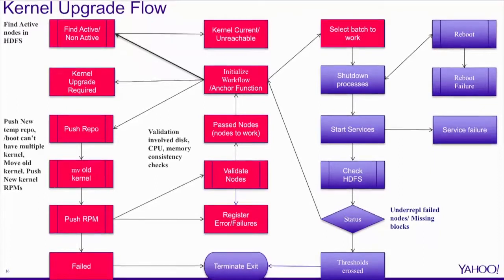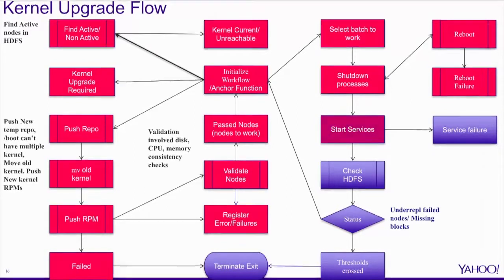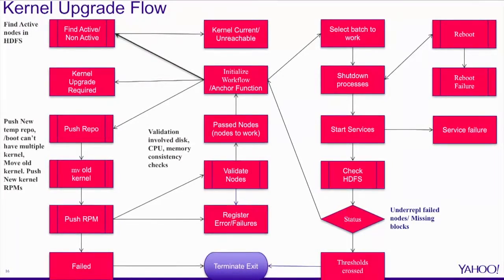The next day, we would have a batch to work on. We would shut down the processes on the nodes, reboot the nodes, and have a threshold for failure on reboots. Then services would be started, and finally HDFS would be checked. All these thresholds — RPM failure, service failure, or reboot failure — were checked at this time. If the threshold was crossed on any of these failures, the whole process would terminate, and we would work on debugging those problems and fix them before moving to the next batch.